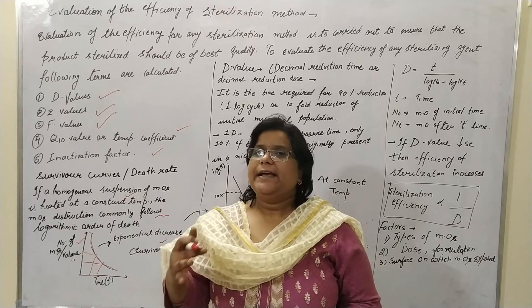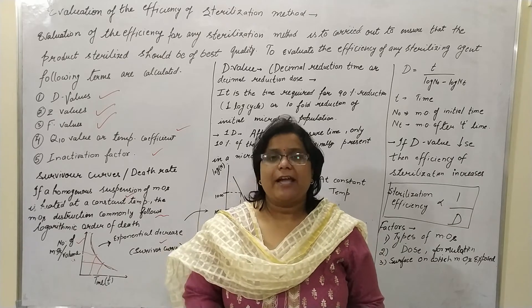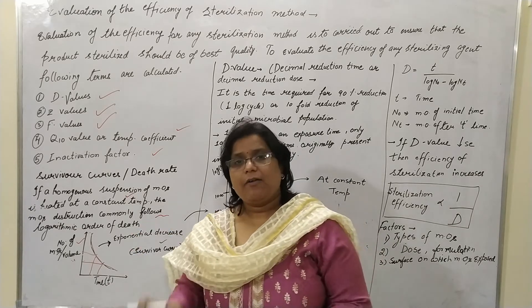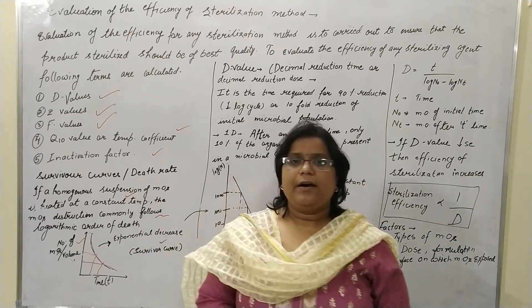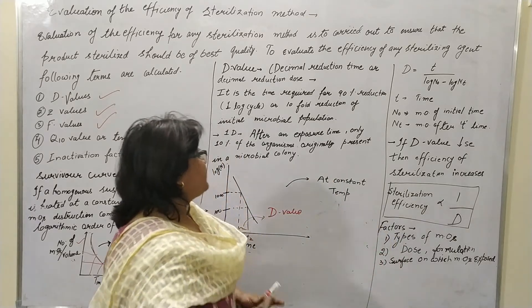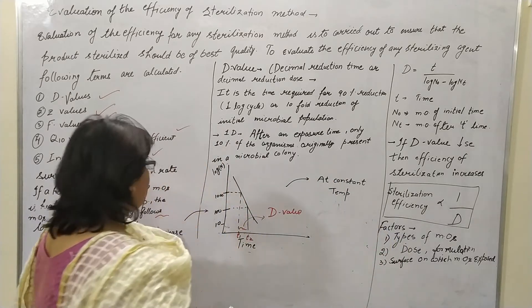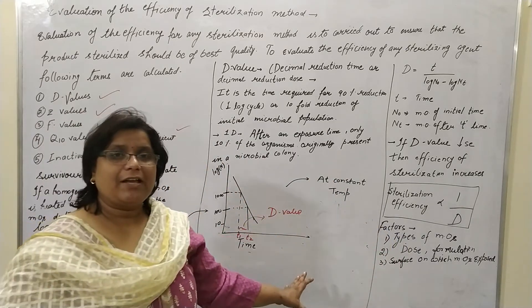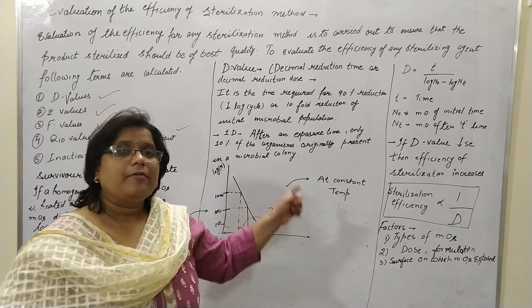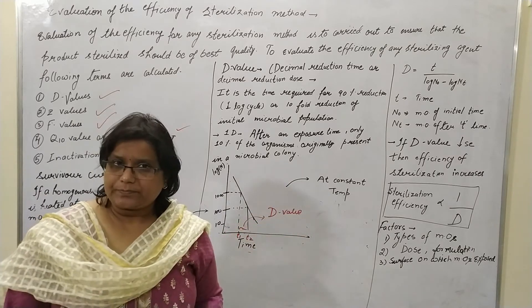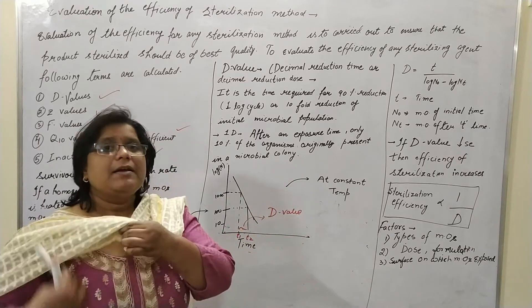So with the help of this survival curve, we can determine at any point in time how many microorganisms in this evaluation parameter are survived or remain in viable form. So we will determine the survival curve and after that use the survival curve to decide.